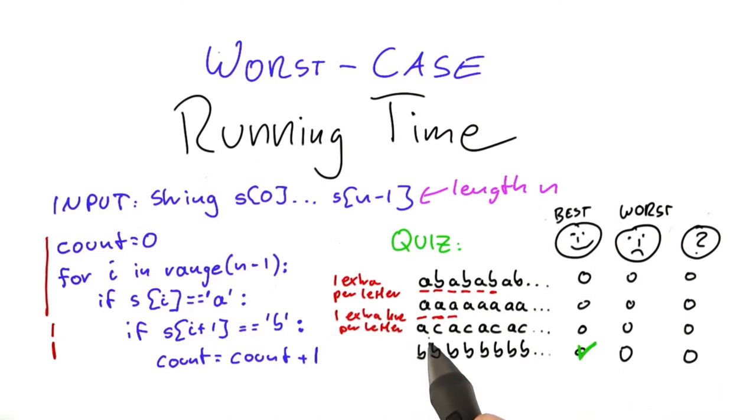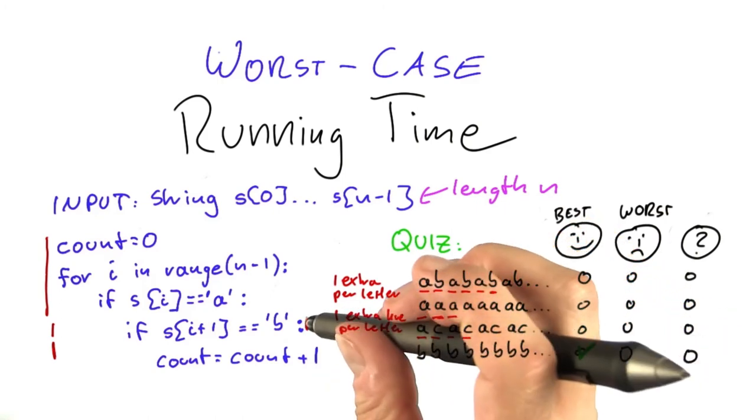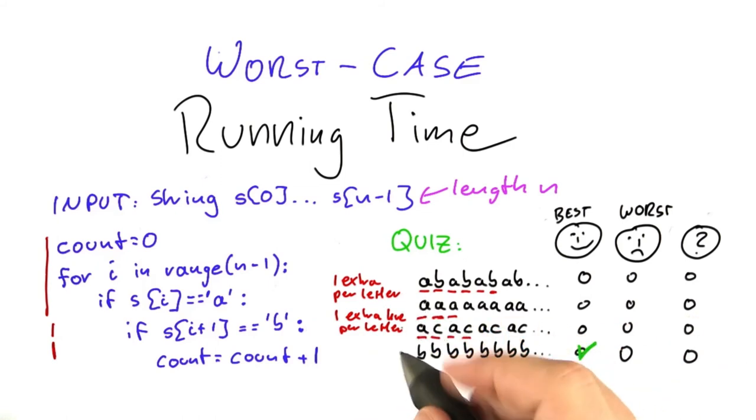Now, finally, if the algorithm encounters ACACAC, what will happen is this. First, the algorithm encounters an A, so it executes this line down here, but then it does not encounter a B, so it will not go into this line. Next letter, the algorithm encounters a C, so it will not execute this line down here, and so on. I think you get the picture. So this is not one extra line per letter, but it will only be 0.5. So it already tells us that this string here is not a worst case string. It's something in between.